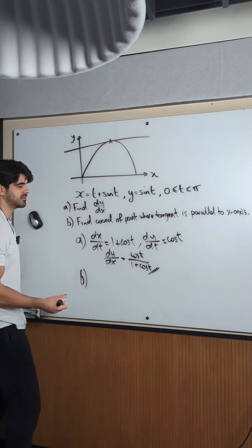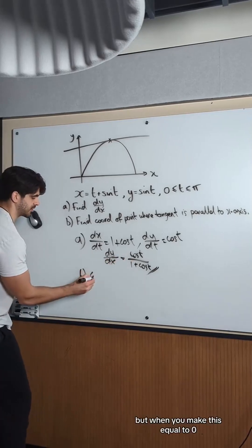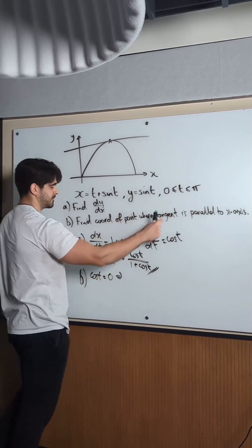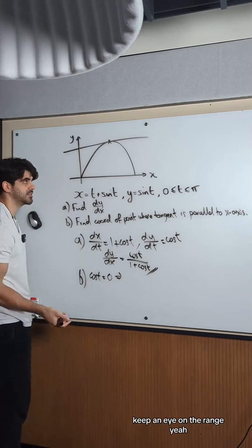But when you make this equal to 0, the denominator just goes. It's just when cos t equals 0. Keep an eye on the range. So inverse cos of 0 is pi over 2.